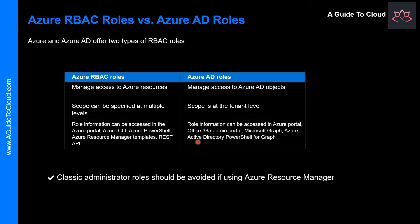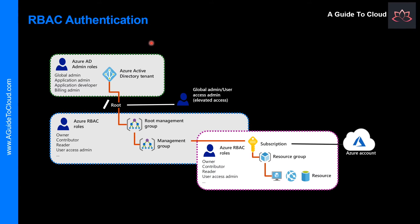To manage resources in Azure AD — such as users, groups, and domains — there are several Azure AD administrative roles. At a high level, Azure RBAC roles control permissions to manage Azure resources, while Azure AD administrator roles control permissions to manage Azure Active Directory resources. A table compares some of the key differences. Note that classic administrative roles should be avoided if you are using Azure Resource Manager. This diagram provides a high-level view of how Azure RBAC roles and Azure AD administrator roles are related and work together to authenticate users.